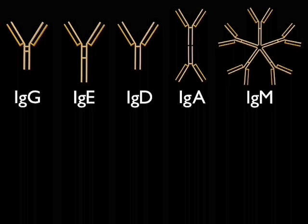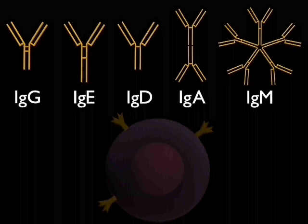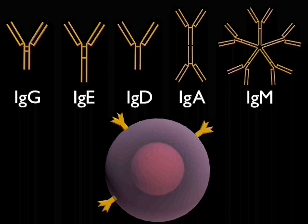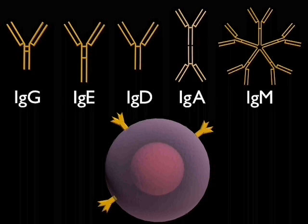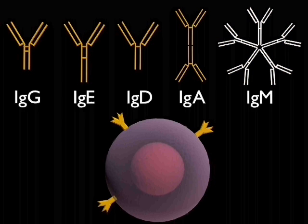The class of an antibody is determined by its heavy chains, and each antibody can be produced either as a cell surface antigen receptor on B cells or as a secreted molecule. The secreted form of IgA is a dimer of the basic four-chain structure, and IgM is a pentamer.